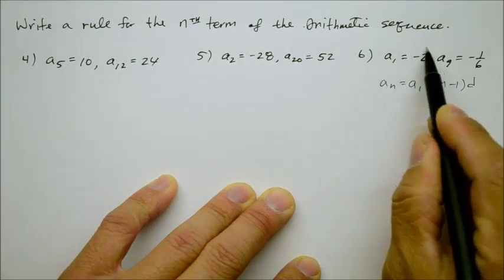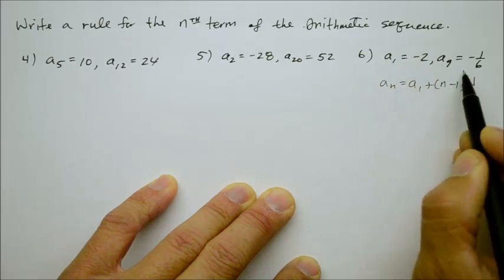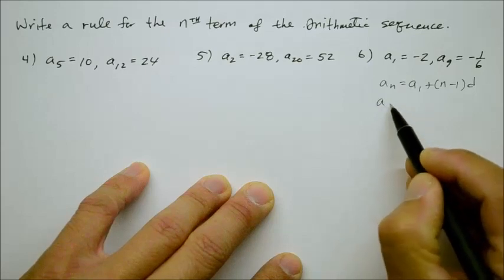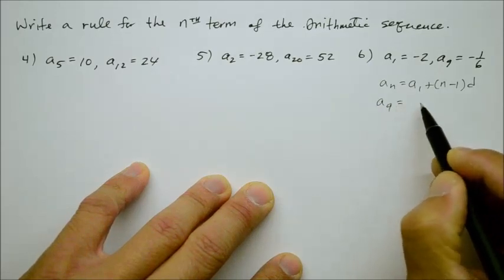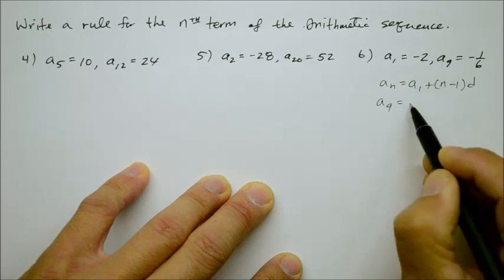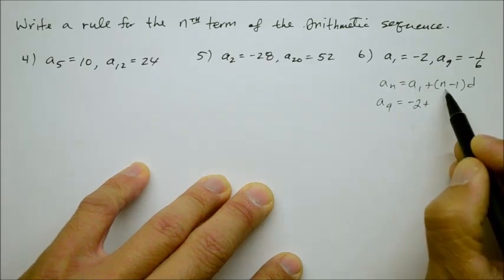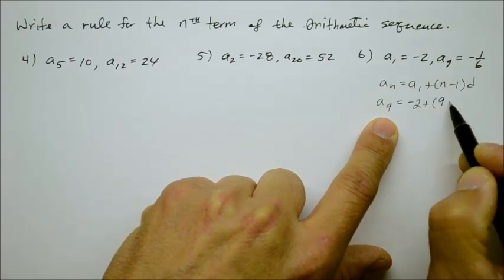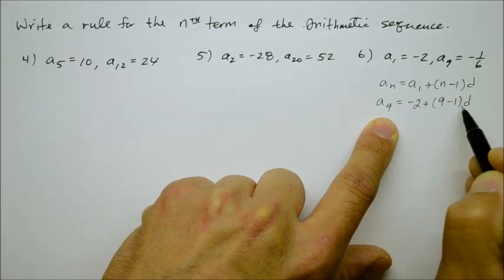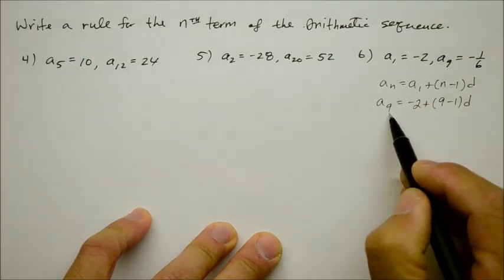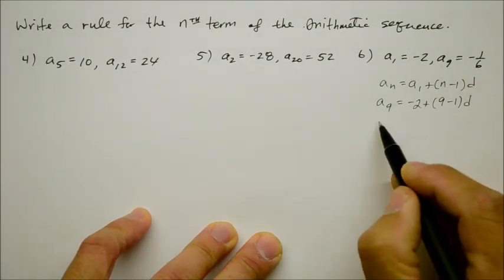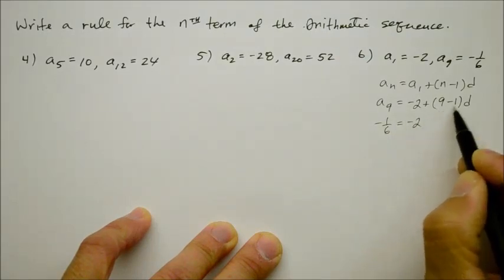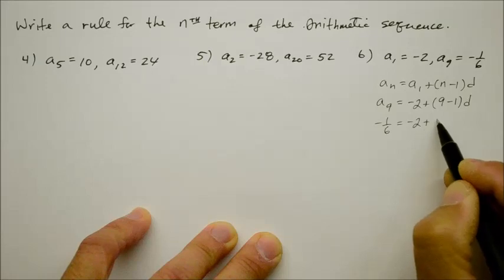We know what the first sequential number is, so we don't have to worry about that. For the second one, we go a sub 9, and that is equal to — we know what a sub 1 is, it is negative 2, so we put that in there — plus the n. Now we're looking for the ninth position, so we put 9 there minus the 1, and the difference is what we do not know. Now what is a sub 9? It's given as negative 1 sixth.